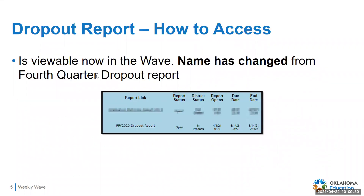Moving on to the dropout report — some of you may have noticed that the name of the report has changed since last week. It has changed from the 'fourth quarter dropout report' to the 'full fiscal year 2020 dropout report.' It was changed to make it clearer which fiscal year we were reporting on. As a reminder, our fiscal year goes from July 1 through June 30.